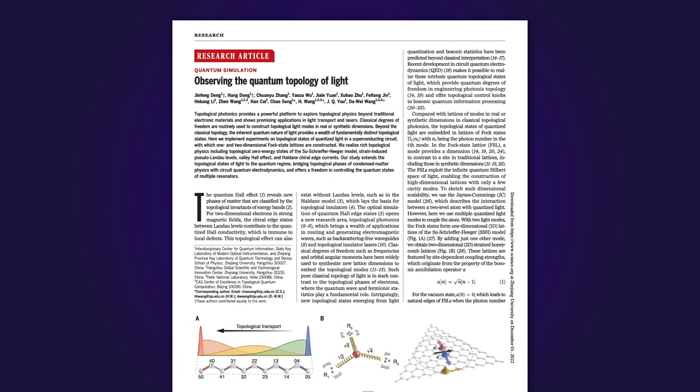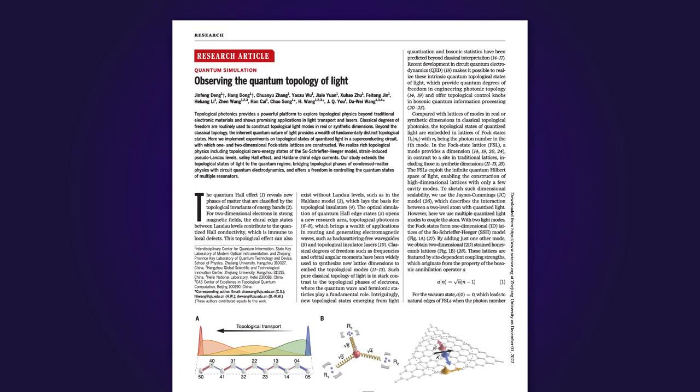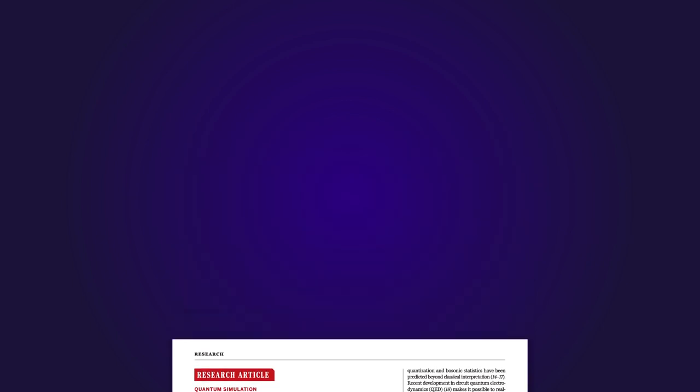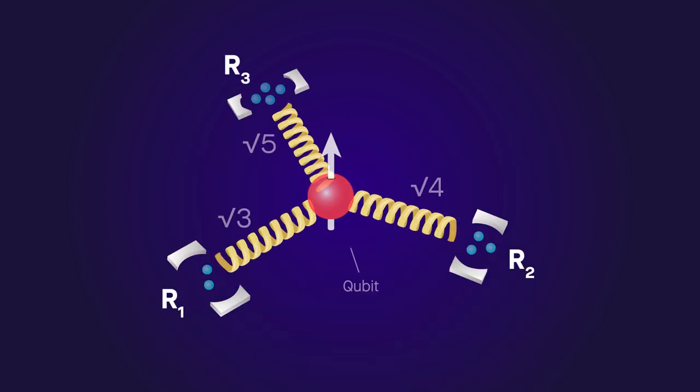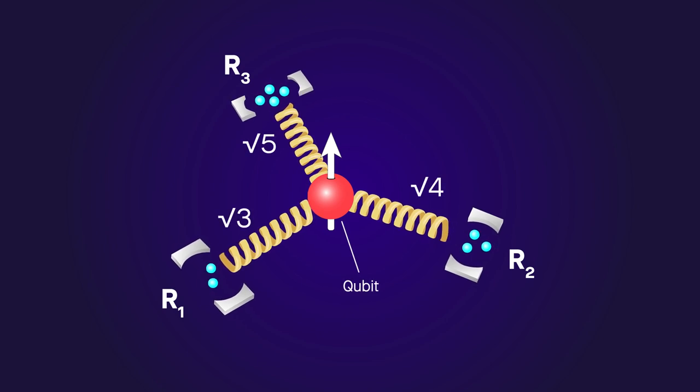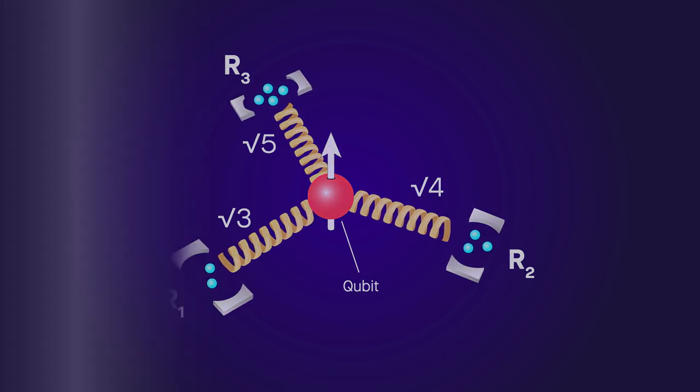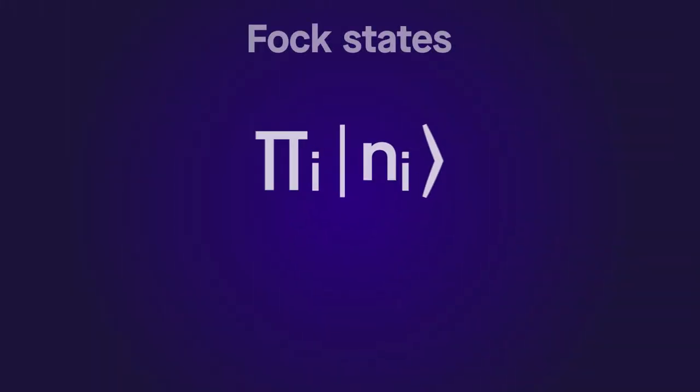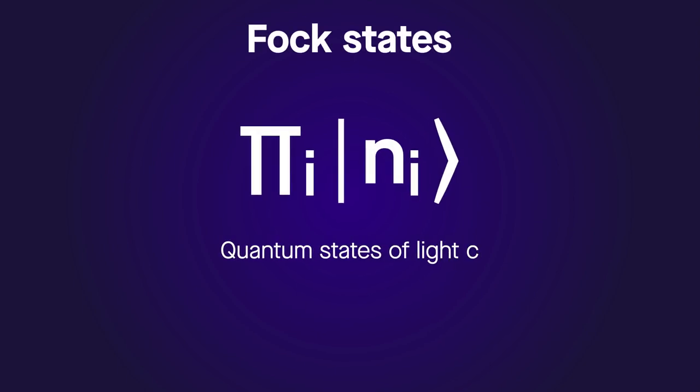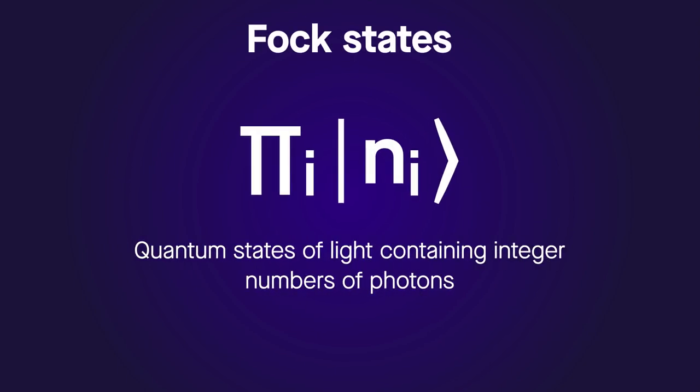Reporting in the journal Science, the team describes the quantum circuit they created to exploit the quantum properties of light for topological photonics. The device consists of three superconducting resonators interconnected by a central qubit, where the coupling strength between each resonator and the qubit is programmable. The number of light modes corralled by this device determines the lattice shape formed by Fock states, the quantum states of light containing integer numbers of photons.